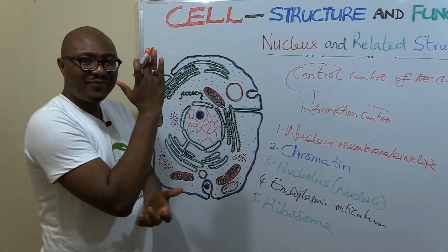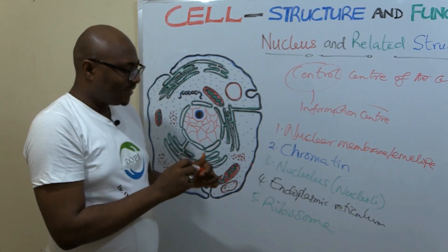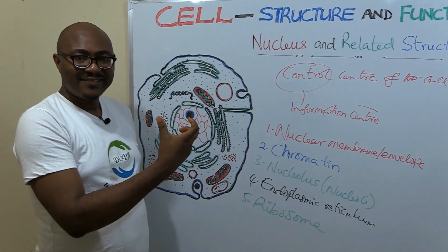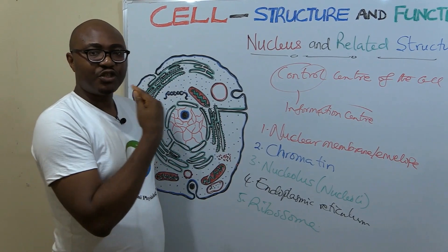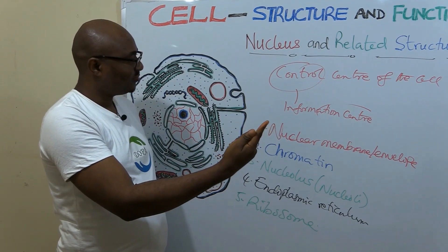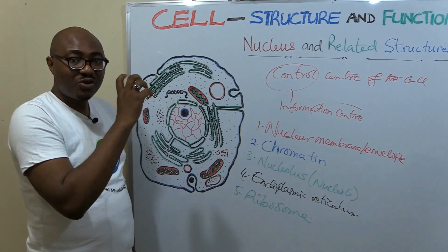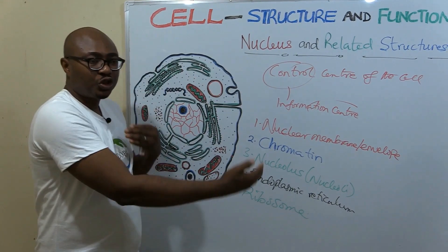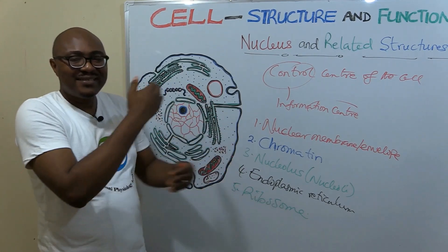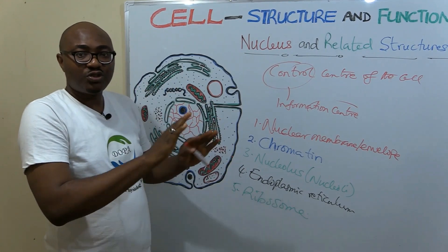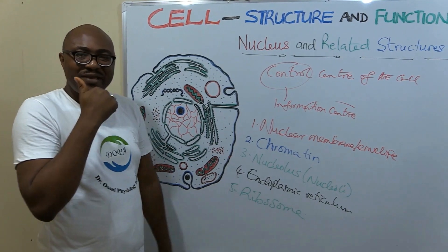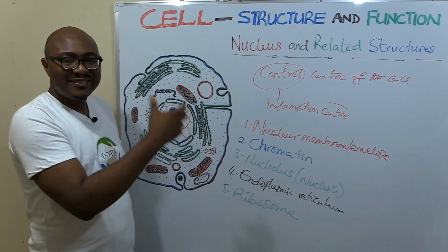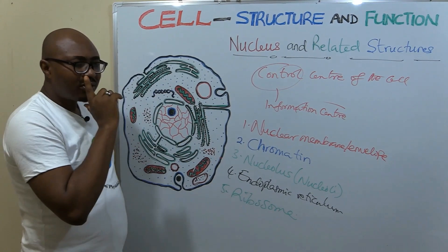Now, what does the nucleus do? The nucleus, as we said, is the information center. And wherever you have information, that's where you have instructions. There are two major functions of the nucleus. Number one is that it controls the day-to-day functions of the cell by giving instructions on what the cell should do.